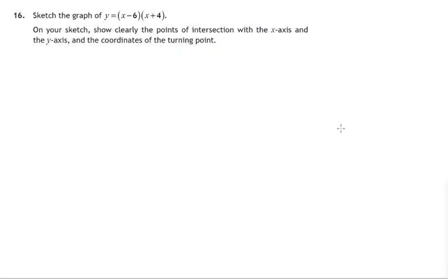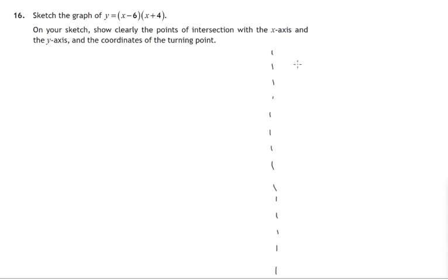Hi, Mr Corsey here. In this question we're asked to sketch the graph of y equals x minus 6 times x plus 4, and we have to show clearly points of intersection of the x and y axis and the coordinates of the turning point. So what kind of graph are we expecting when we graph this?